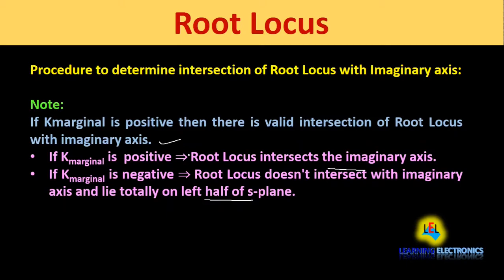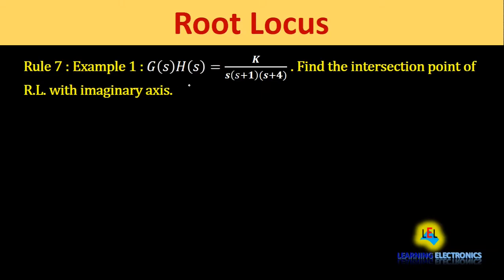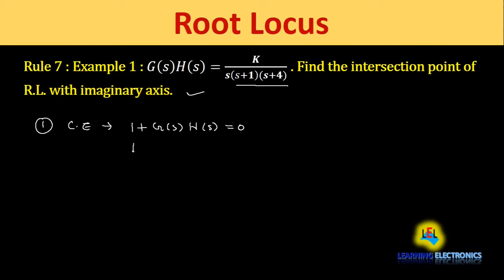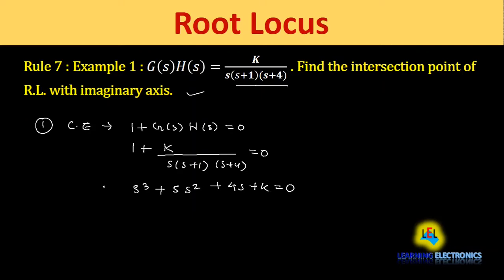For rule number 7, Example 1: G(s)·H(s) = k / [s(s+1)(s+4)]. Find the intersection point of root locus with the imaginary axis. Step 1 is to find the characteristic equation using 1 + G(s)·H(s) = 0, which gives 1 + k / [s(s+1)(s+4)] = 0. Solving this, we get the characteristic equation: s³ + 5s² + 4s + k = 0.